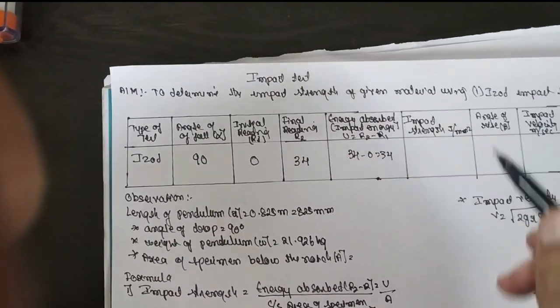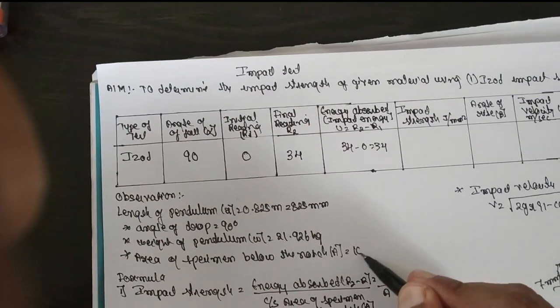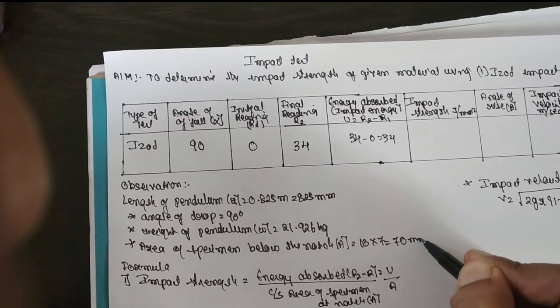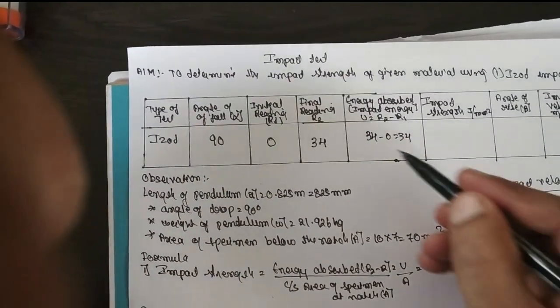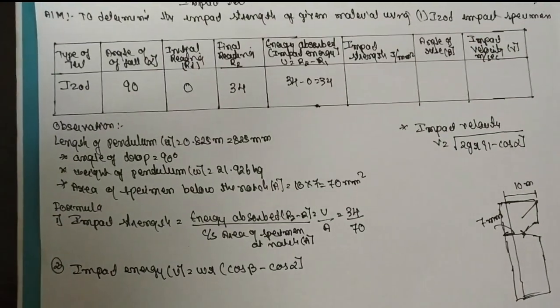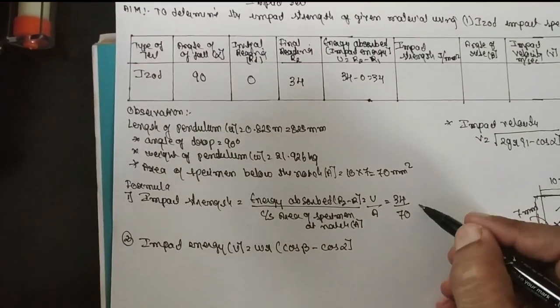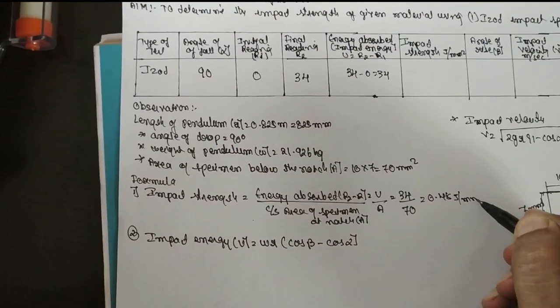Now, impact strength can be found with the help of this part. Area of the notch will be 10 into 7. It is nothing but 70 mm square. Now, answer for this is nothing but 0.48 joule per mm square.